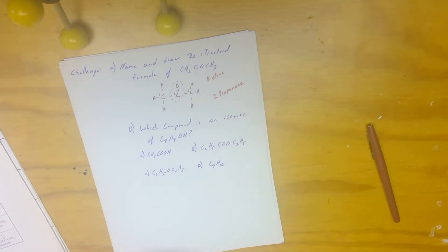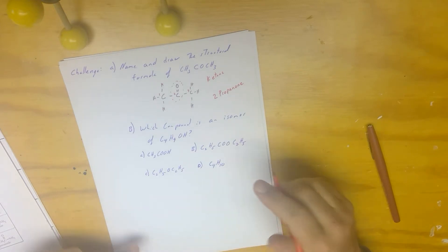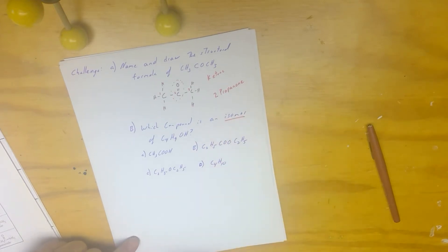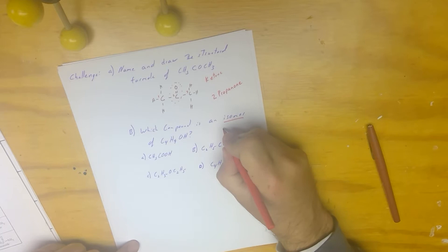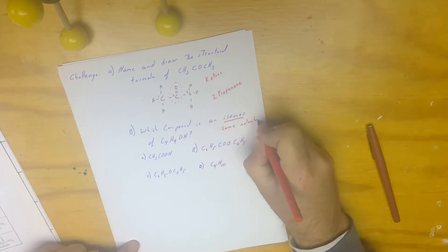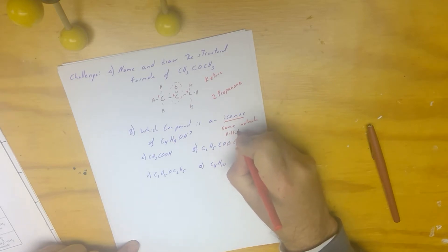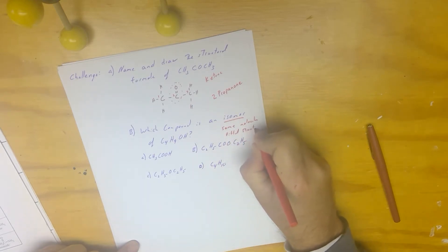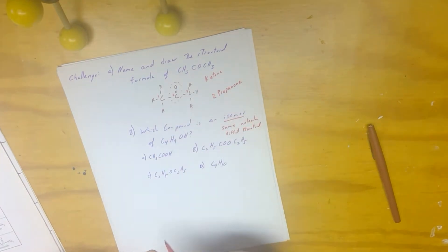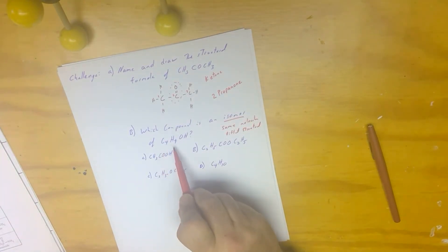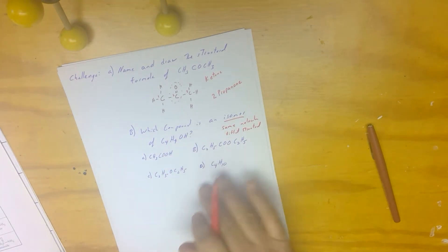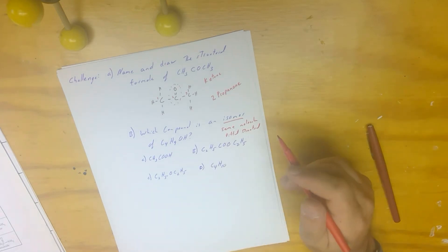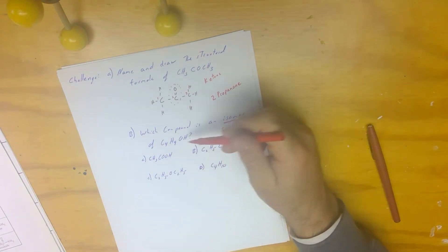Which compound is an isomer of C₄H₁₀O? First, we have to know what an isomer is — it's the same molecular formula but a different structural formula. So we have to have four carbons, ten hydrogens, and one oxygen. I have to have that, and it's going to be in a different arrangement. Let's see if we can figure out which one of these it is. Can it be C₄H₁₀? It can't be that one because there's no oxygen.